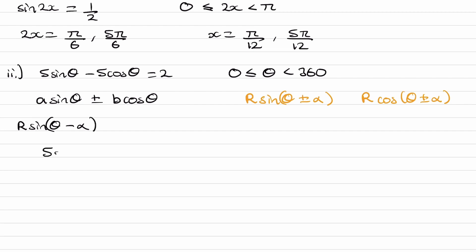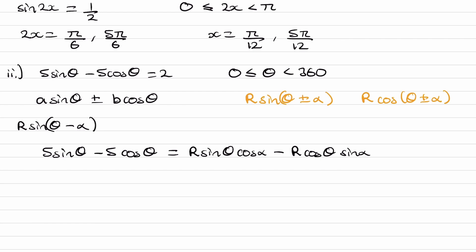We want to express 5 sine theta minus 5 cos theta as R sine theta minus alpha. The expansion of R sine theta minus alpha is R sine theta cos alpha minus R cos theta sine alpha. Matching terms — sine theta here and cos theta there — the coefficient 5 equals R cos alpha, and the other 5 equals R sine alpha. So we have R sine alpha equals 5 and R cos alpha equals 5.